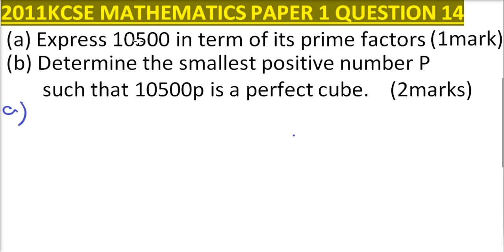We can use this method. So we write 10,500. We divide by 2, you will be able to get 5,250. We divide again by 2, you will be able to get 2,625. You can use your calculator. We divide by 3.